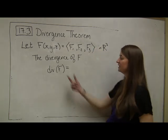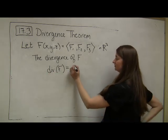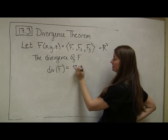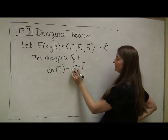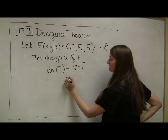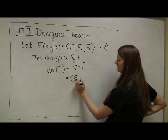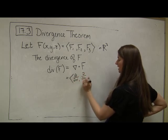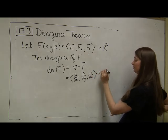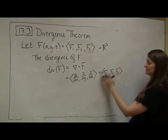In R3, the divergence of F, usually we abbreviate it as div(F), is equal to the dot product of the gradient operator with F. Recall from last time that we can think of this gradient as an operator given by the partial derivative with respect to x, the partial derivative with respect to y, and the partial derivative with respect to z.